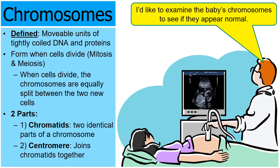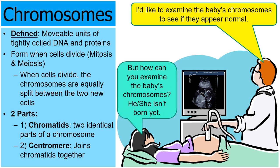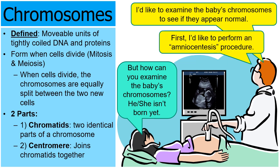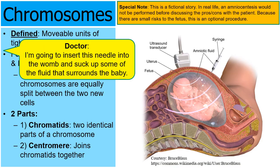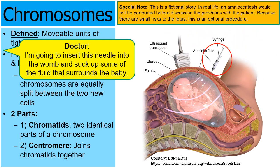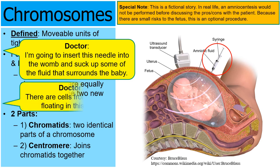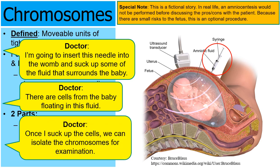The doctor says, I'd like to examine the baby's chromosomes to see if they appear normal. Norma asks, how can you examine the baby's chromosomes if she isn't even born yet? The doctor explains: I'll perform an amniocentesis procedure — inserting a needle into the womb to draw up some of the surrounding fluid. There are cells from the baby floating in this fluid, and once I collect those cells, we can examine the baby's chromosomes.